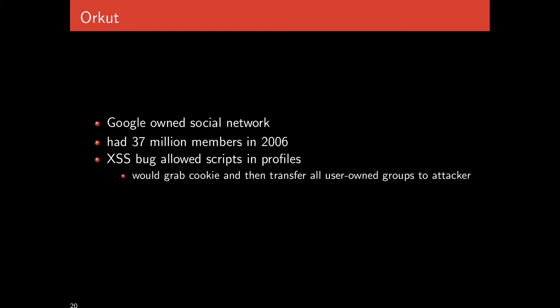Some real-world examples: Orkut, a social networking website with 37 million members in 2006, had a cross-site scripting bug that allowed scripts in profiles. You could add a script to your profile that would grab the cookie, transfer all user-owned groups to the attacker, and then other people who loaded your profile would get infected with the script as well.